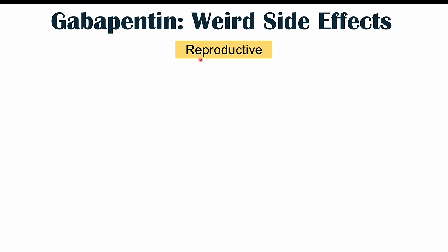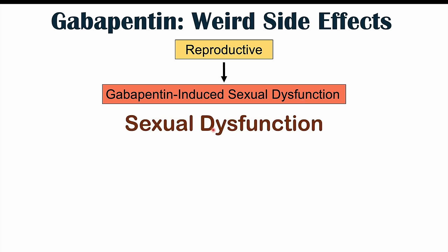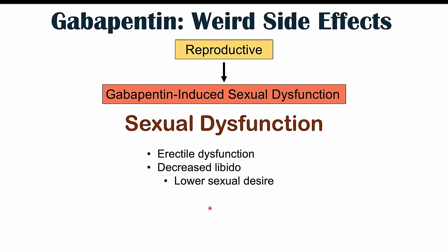Finally, there are reproductive side effects. Gabapentin can lead to gabapentin-induced sexual dysfunction, which may include erectile dysfunction, decreased libido, and ejaculation difficulties and anorgasmia. Please check out my other lesson on common side effects of gabapentin, and also my lesson on what to avoid when taking gabapentin to learn about things that can increase the risk of respiratory depression. Please like and subscribe for more lessons, and thanks so much for watching!